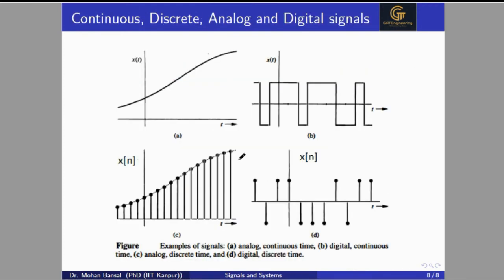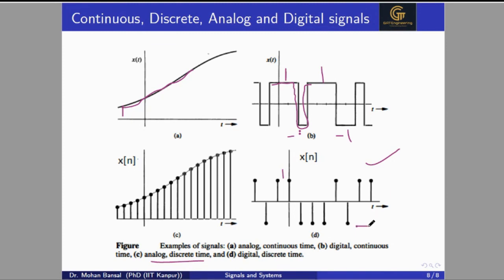To differentiate between continuous, discrete, analog, and digital signals: a signal that is continuously varying in both time and amplitude is called a continuous time analog signal. A signal that is continuous in time but has amplitude discretized to only two levels — such as one and minus one — is a digital continuous time signal. A signal whose amplitude varies continuously but whose time axis is discretized is an analog discrete time signal. Finally, a signal where both the amplitude is discretized (to one or minus one) and the time axis is discretized is a digital discrete time signal.